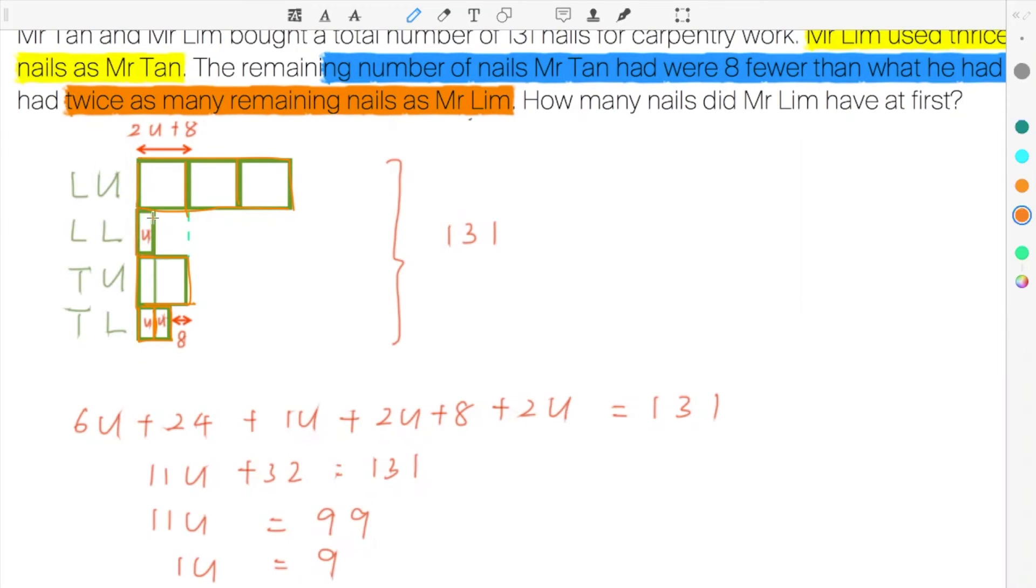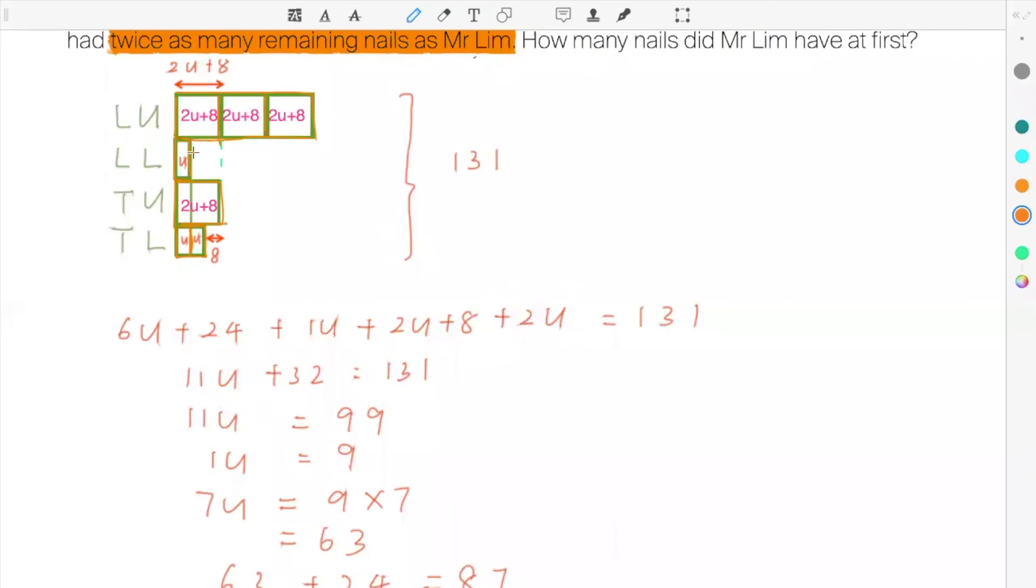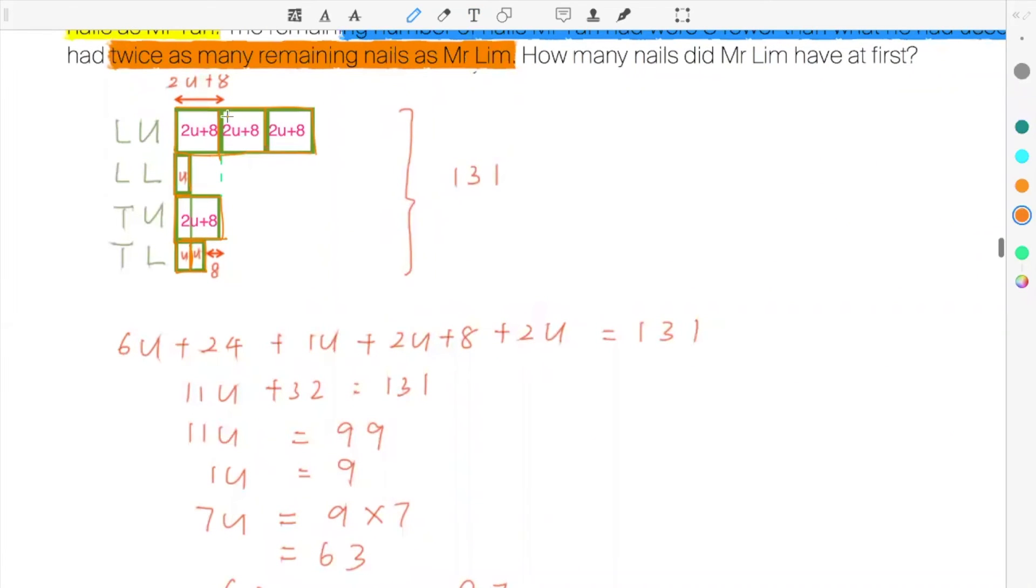And then Mr. Lim will be one very small unit. One orange part here is equivalent to two units plus eight. All together as 131. So Mr. Lim used how much? Two, four, six. Two, four, six. Six units plus eight. Sixteen, twenty-four.